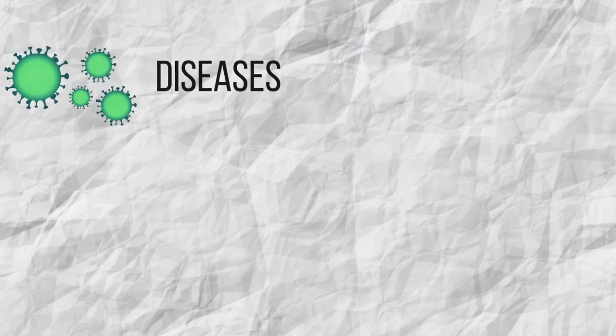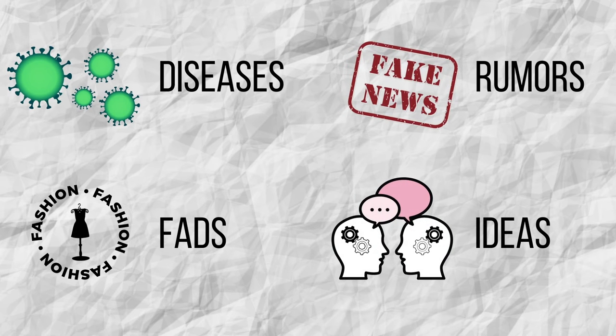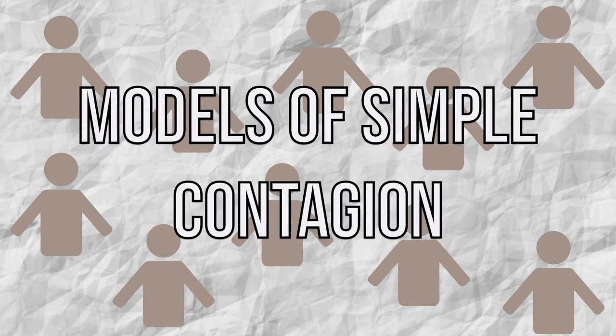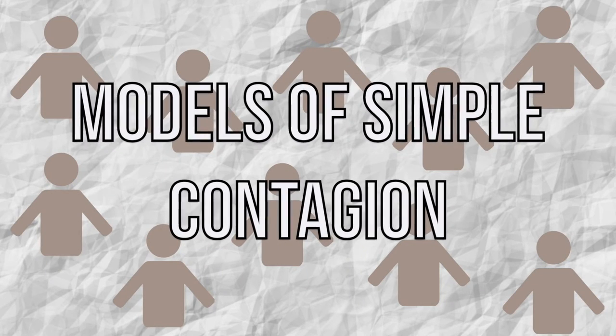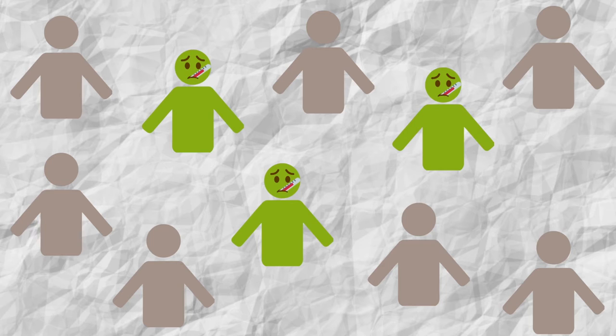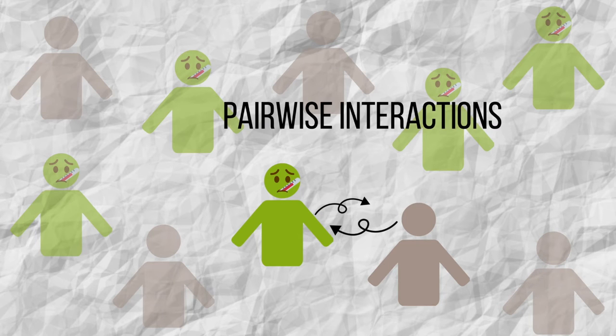In the following, we will explain this so-called infection, contagion, and spreading models. These describe how diseases, rumors, fads, or ideas spread through society from an initial source. We will distinguish between two types of models: simple contagion and complex contagion. We start with simple contagion models, which are used to describe the spread of a disease.